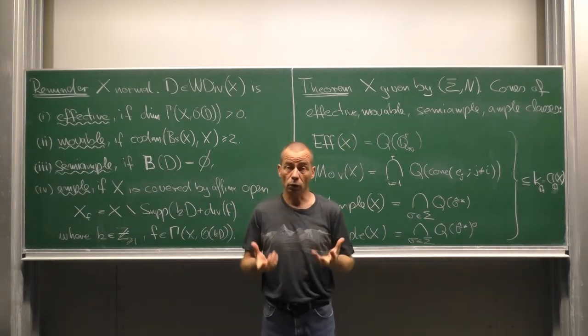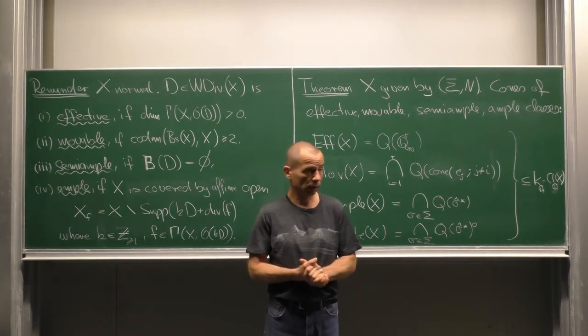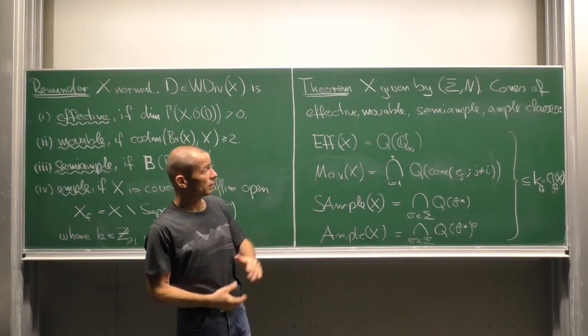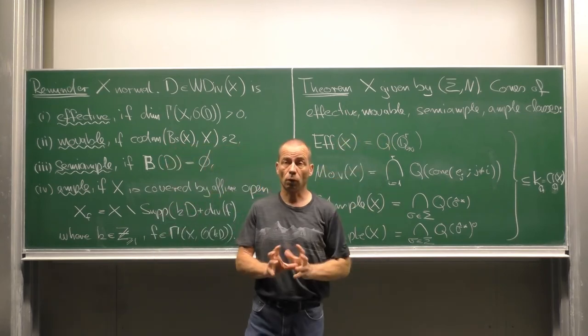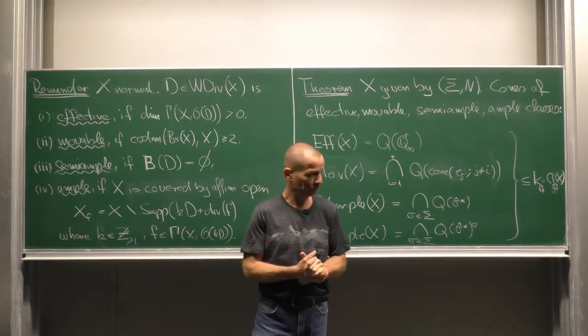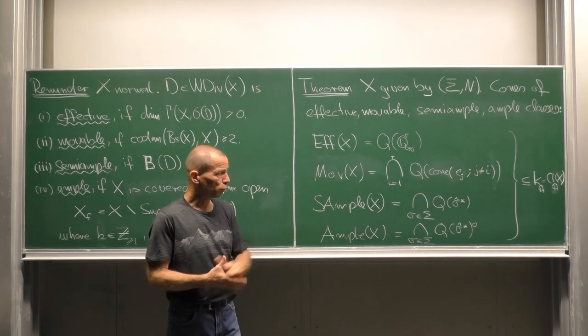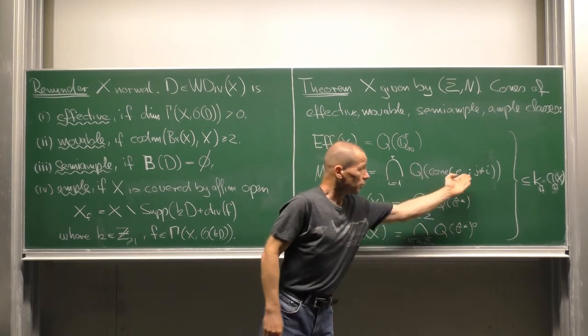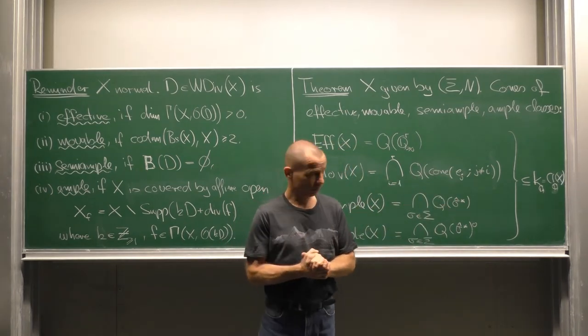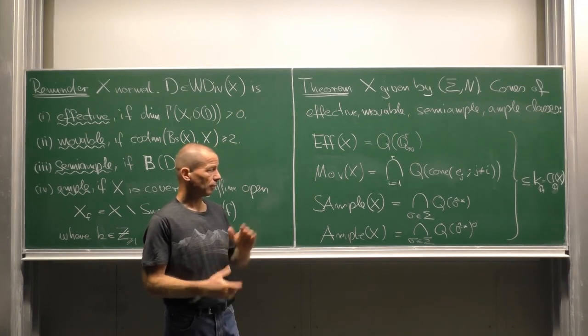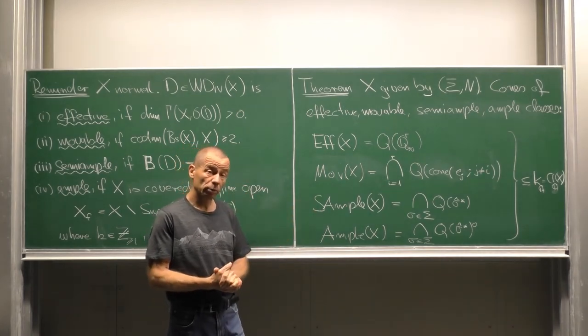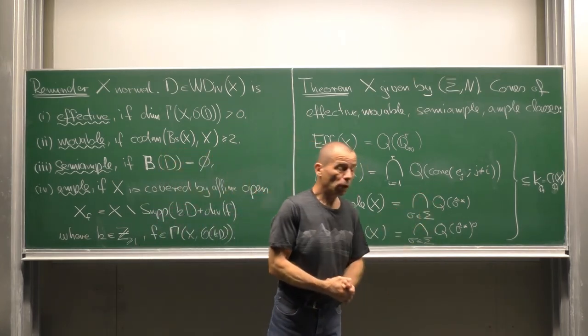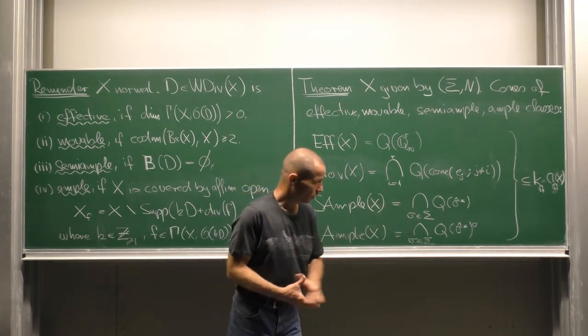Here is how these cones look like in the case of a toric variety. The cone of effective divisor classes is just the image of the orthant under the map q. The cone of movable divisor classes is the intersection over all the images of the facets of the orthant, q of sigma hat star where sigma runs through the fan.